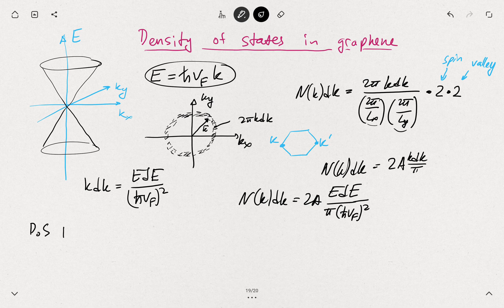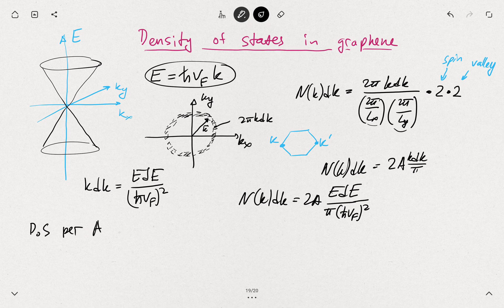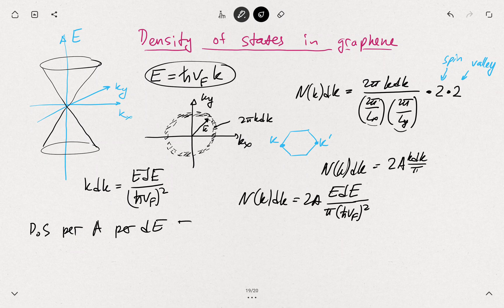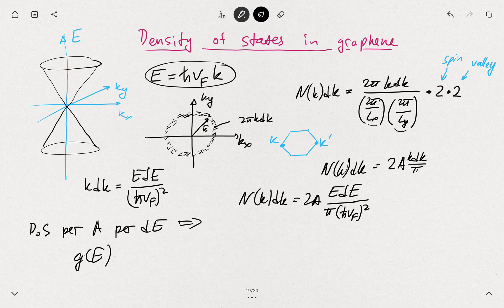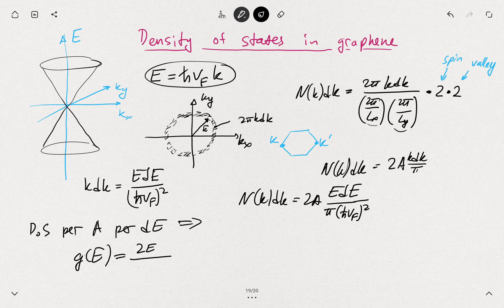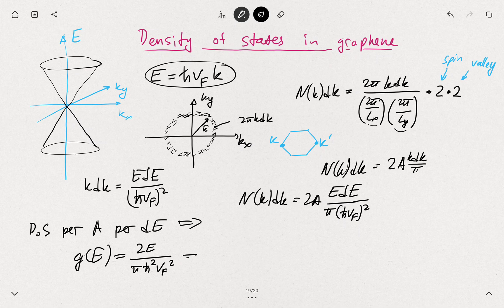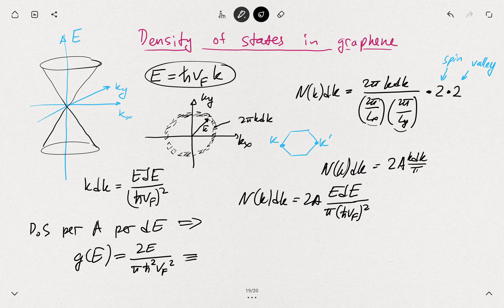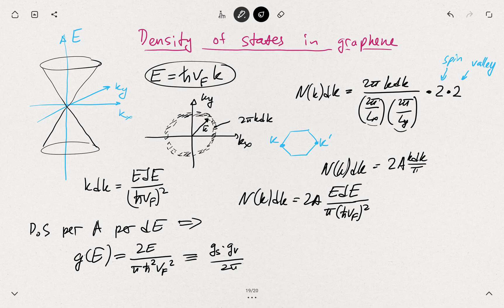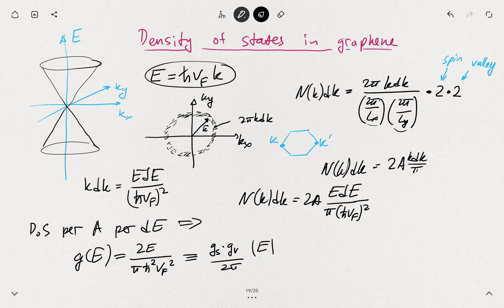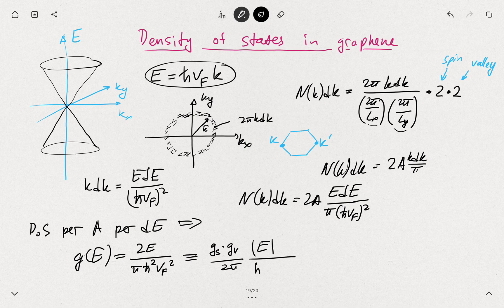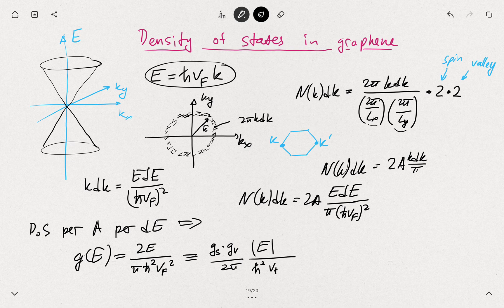We usually write a density of states per unit area per dE. So we are using g, right? So g of E for graphene is 2E over π h-bar squared vf squared. Or if you want to explicitly talk about the spin and valley degeneracy, you can then say that g is g-spin times g-valley divided by 2π, E to the absolute value, because of the electron-hole symmetry in the low energy approximation, h-bar squared vf squared.